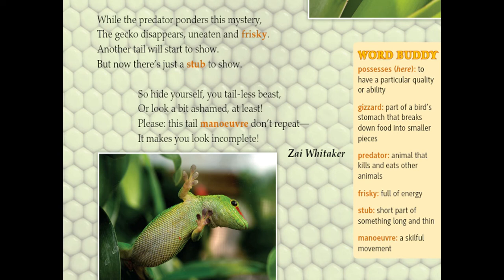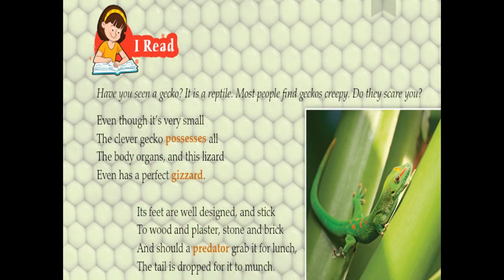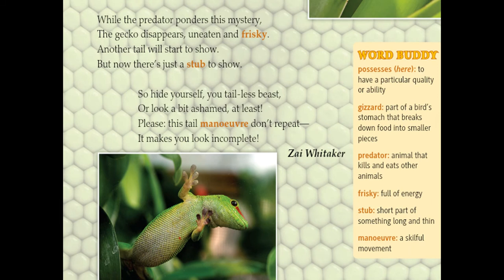So this is what the poet wants to tell you about the gecko in this poem. Now let me recite the full poem: Even though it's very small, the clever gecko possesses all the body organs, and this lizard even has a perfect gizzard. Its feet are well designed and stick to wood and plaster, stone and brick. Should a predator grab it for lunch, the tail is dropped for it to munch. While the predator ponders this mystery, the gecko disappears uneaten and frisky. Another tail will start to show, but now there is just a stub to show. So hide yourself, you tailless beast, or look a bit ashamed at least. Please this tail maneuver don't repeat — it makes you look incomplete.